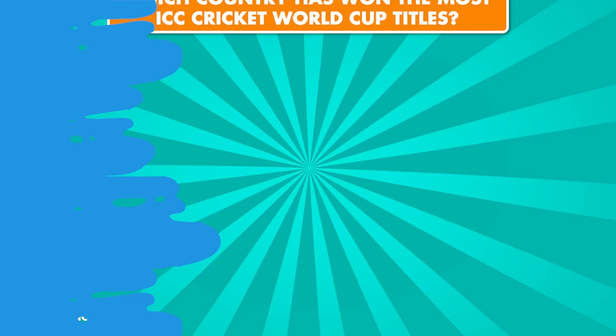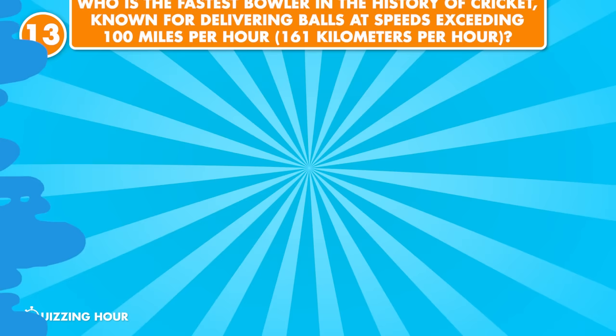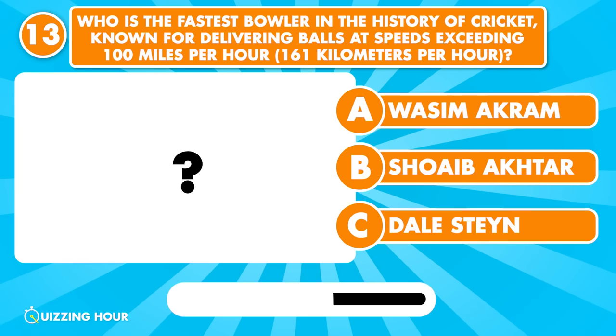Which country has won the most ICC Cricket World Cup titles? Australia, five times. Who is the fastest bowler in the history of cricket, known for delivering at speeds exceeding 100 miles per hour?